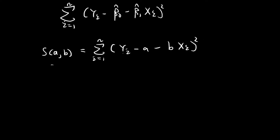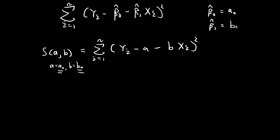So let's say for A equal to A0 and B equal to B0, where A0 and B0 are some constants, this function is minimized. Once we find the values A0 and B0, we can then set the estimate of beta 0 to be equal to A0, and then set the estimate of beta 1 to be equal to B0.